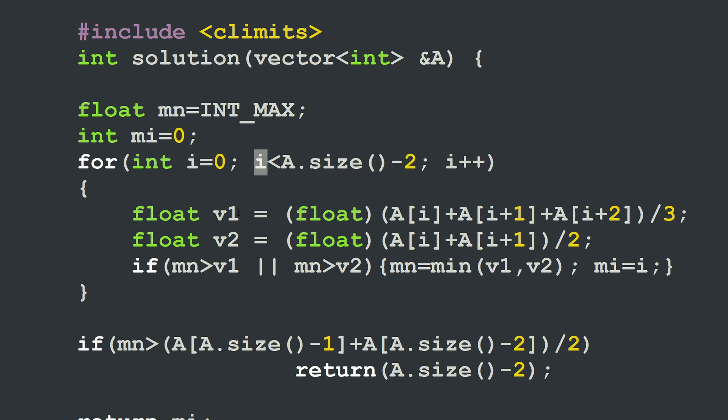Then for each index i value, starting from zero, we're going to calculate two average values, one for a slice of three elements, ai plus ai plus one plus ai plus two divided by three. And then a second one for a slice of two elements, ai plus ai plus one divided by two. We don't have to go beyond this size of slices for the reasons we've just explained in the algorithm section. Then we're going to replace the mn, the minimum value, by the lowest value between v1 and v2, the two averages that we have just calculated, only if one of these values is lower than the current value of mn. So if v1 is lower than the value mn, or v2 is lower than the value of mn, then I'm going to replace mn by the minimum value between v1 and v2. And then I'm going also to keep the current index of the current slice in the variable mi. And we're going to loop over all the elements.